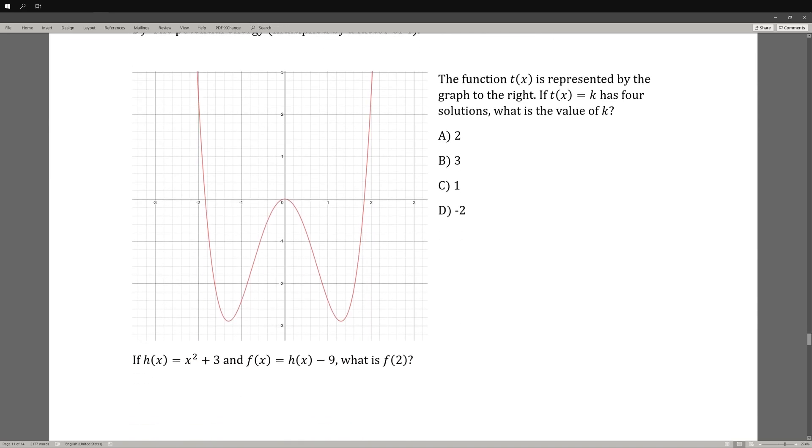To the graph to the right, t(x) is represented. If t(x) = k has 4 solutions, what is the value of k? In order to find 4 solutions, what you need to do is find a point at which the graph intersects 4 times. And t(x) = k, so we're looking for a y value that intersects 4 times. Let's go down the list.